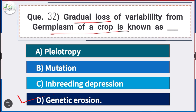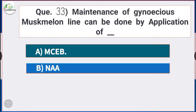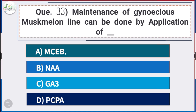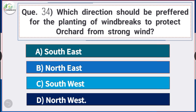Question number 33: Maintenance of gynoecious muskmelon line can be done by application of — answer option A — MH (maleic hydrazide). The maintenance of gynoecious muskmelon line can be done by application of MH.